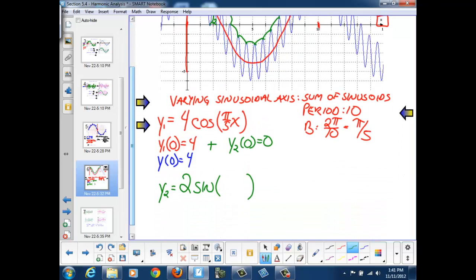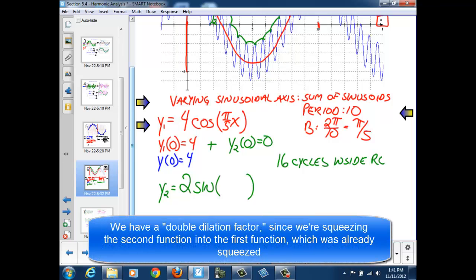So I have 16 cycles within this already dilated red graph. So what that means is since I have 16 cycles inside the red, I must have a lot more cycles inside the normal period of 2 pi. So I take that 16 cycles, and I multiply it by the dilation factor that I already had in my red graph, the pi over 5.